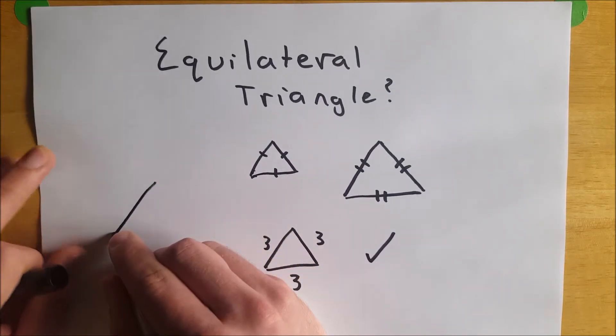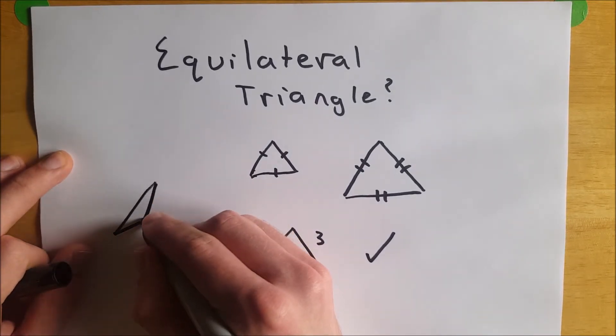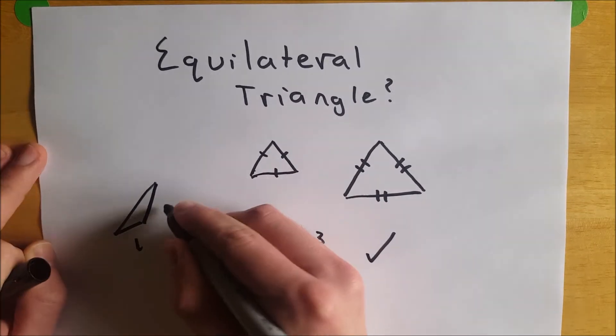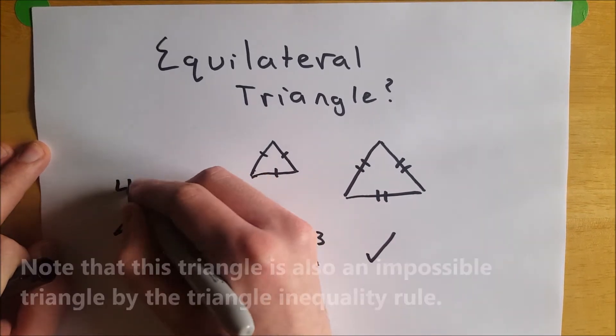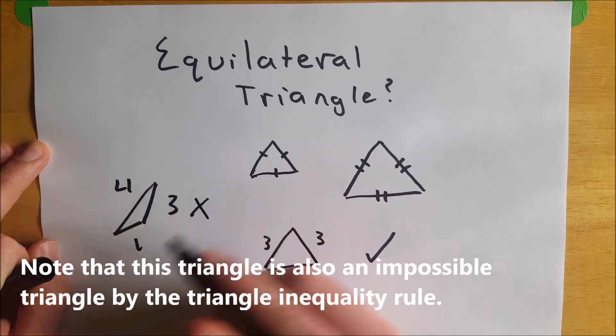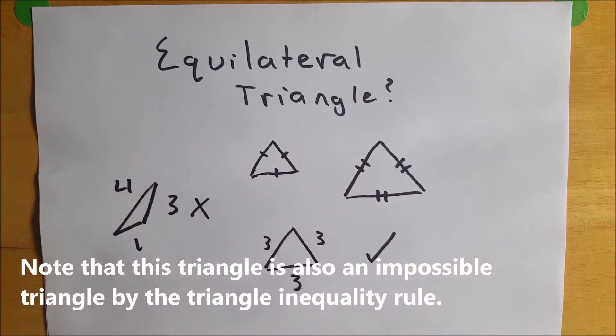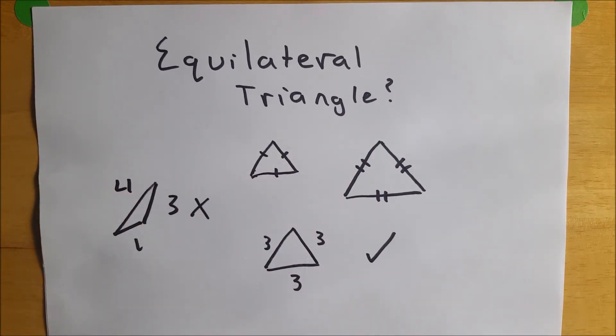But then if we look at a triangle like this, let's say this has side lengths 1, 3 and 4, this triangle is not equilateral because its side lengths do not have the same measure, which means they're not congruent.